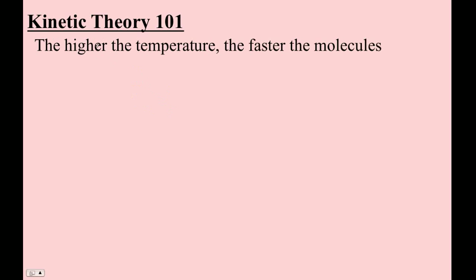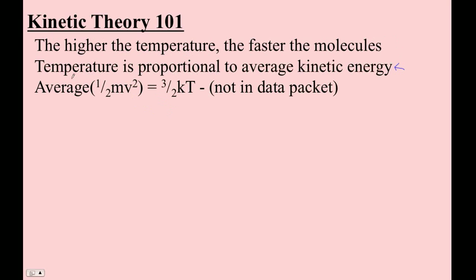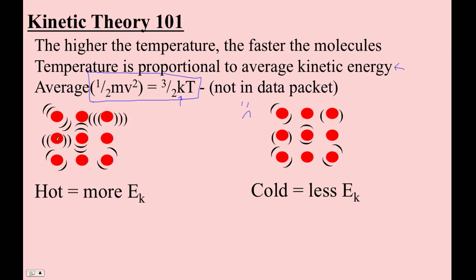Temperature is something that's proportional to the average kinetic energy of a molecule. In fact, we used to have this great formula in the data packet which related the 1/2 mv squared, or the kinetic energy of an ideal gas molecule to the temperature. This is Boltzmann's constant right there. It's not in the data packet anymore, which is sort of sad.